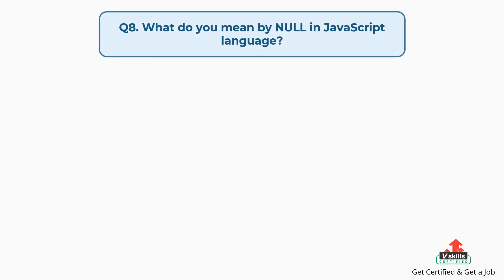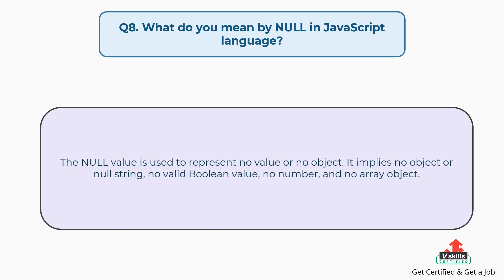Question number eight: what do you mean by null in JavaScript? The null value is used to represent no value or no object. It implies no object or null string, no valid boolean value, no number, and no array object.